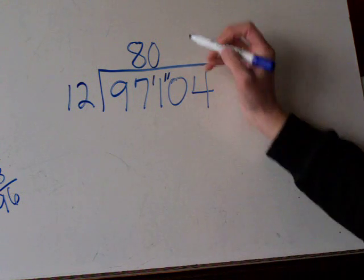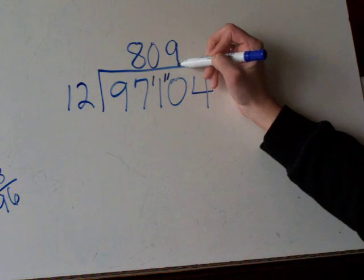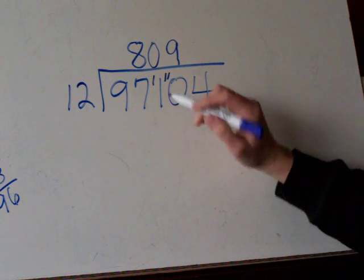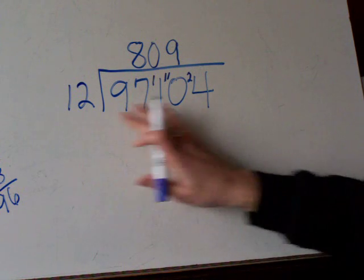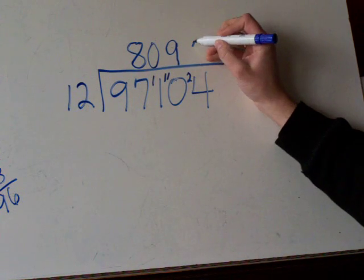12 goes into 110, 9 times. 9 times 12 is 108. So that means there's a remainder of 2.